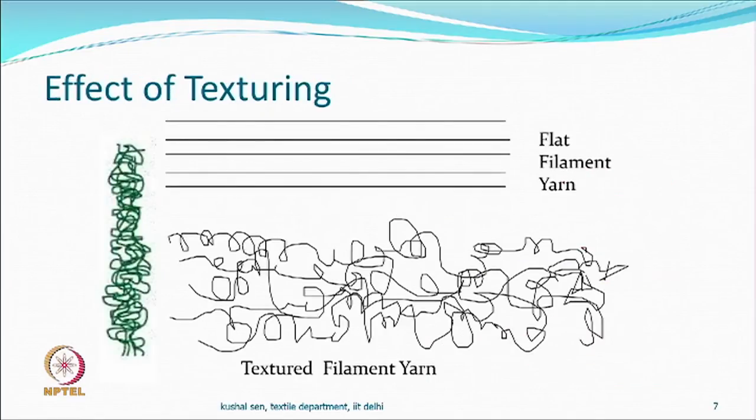A flat filament yarn and a textured filament yarn look different. Stretch can be obtained only if you have crimps, loops, or crinkles which can be easily opened. You should do something so that they come back as well. If they just extend and do not come back, it is not a good product.